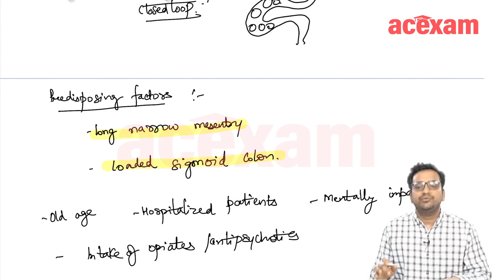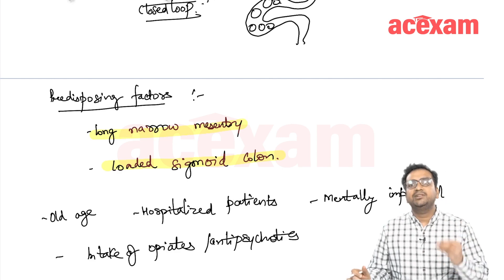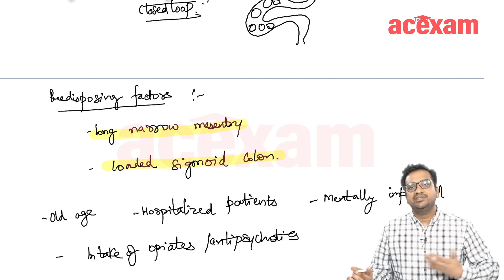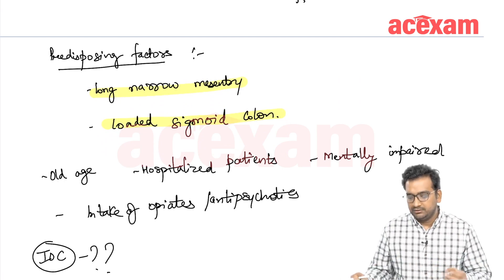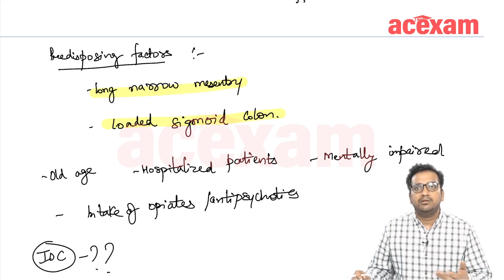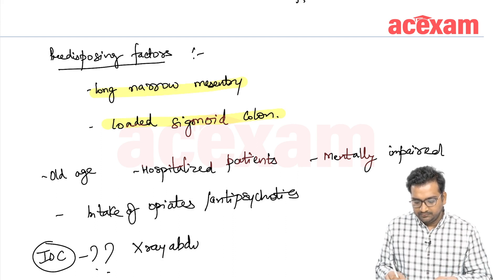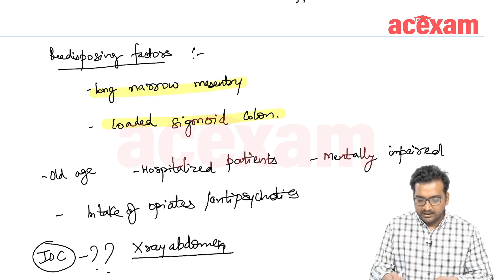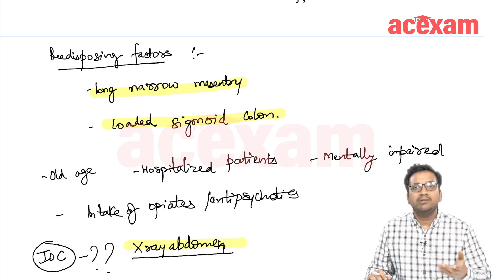The investigation of choice for sigmoid volvulus is x-ray abdomen. The patient generally presents with abdominal distension, abdominal pain, and a tympanic resonant note over the abdomen — features of large bowel obstruction — along with inability to pass flatus and feces.